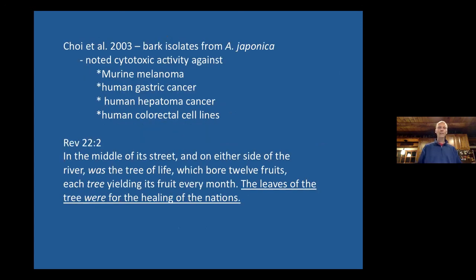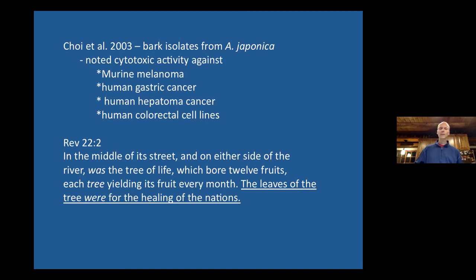Choi et al. in 2003 did isolates from the bark of alnus japonica, the Japanese alder, and noticed cytotoxic activity against murine melanoma — mouse melanoma. They also found it significant against human gastric cancer, human hepatoma cancer, and human colorectal cell lines. So there are interesting anti-cancer effects demonstrated by alder.